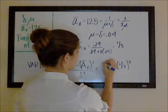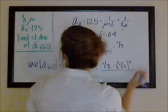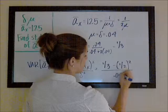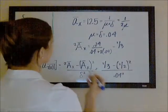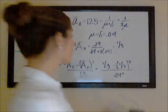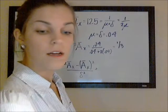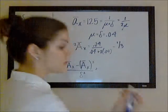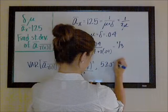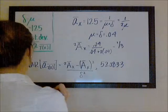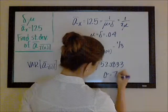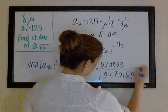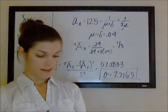They asked for the standard deviation, so the square root of the variance is 7.2169. Alright, that's it for that problem, and I will record a couple more. Thanks for watching and happy studying!